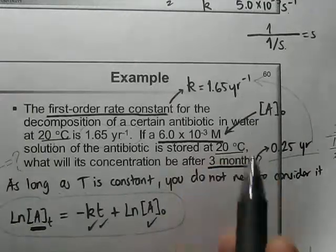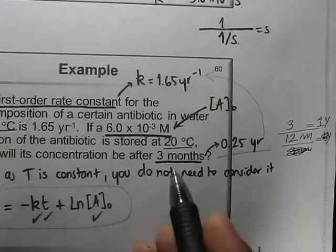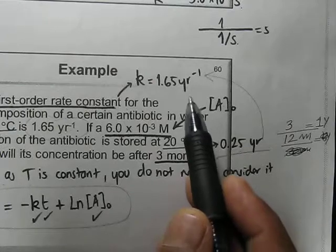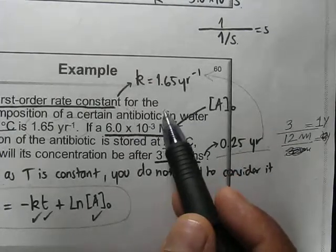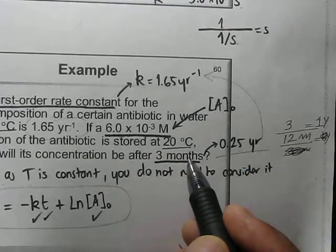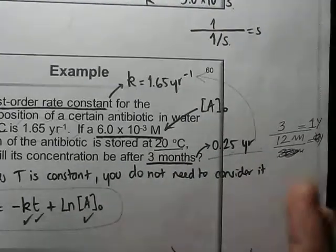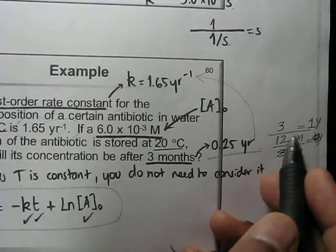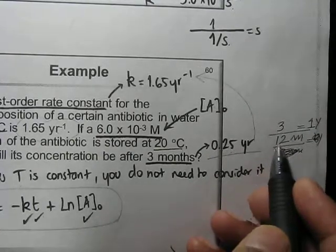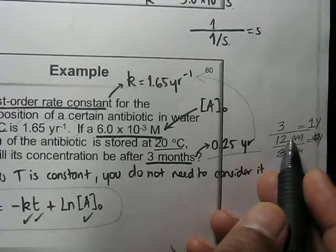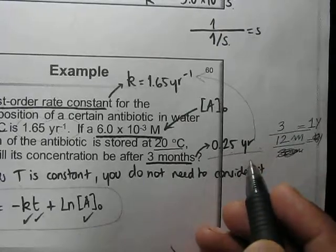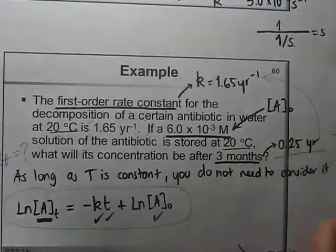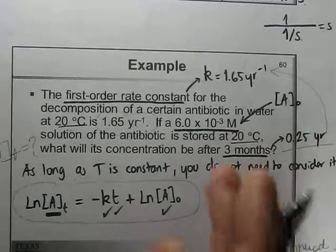It is always better to convert time into the same unit as the rate constant — change the time unit, not the rate constant. Since 12 months = 1 year, 3 months equals 3/12 = 0.25 year. Now all units are consistent and we can plug values into the equation.